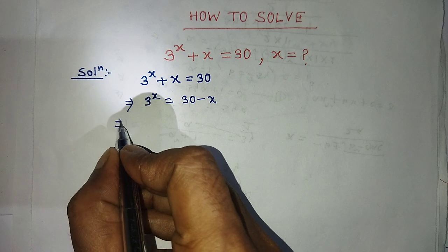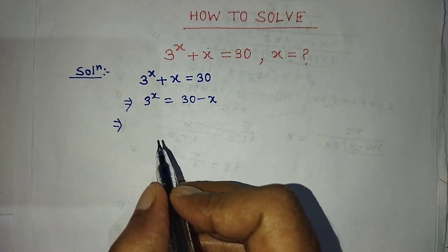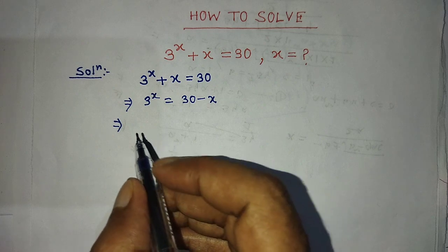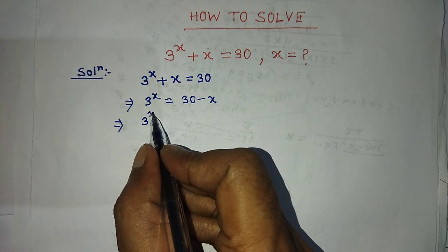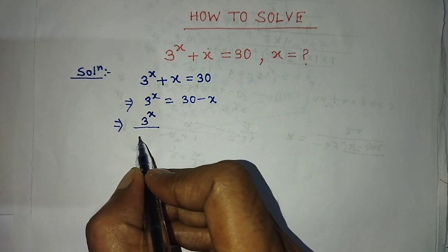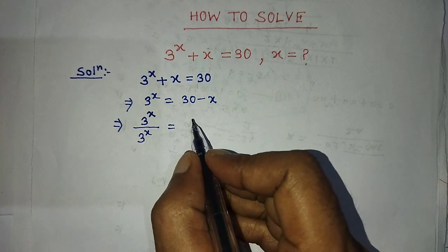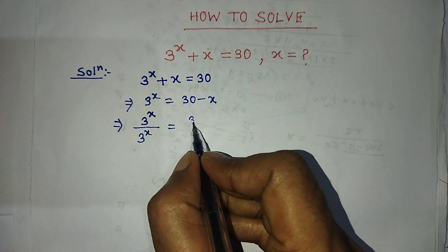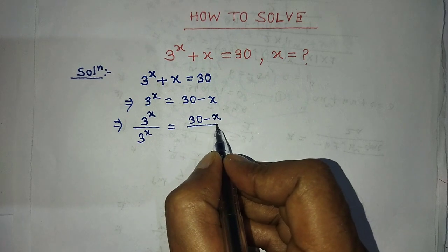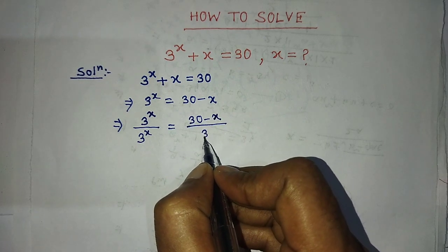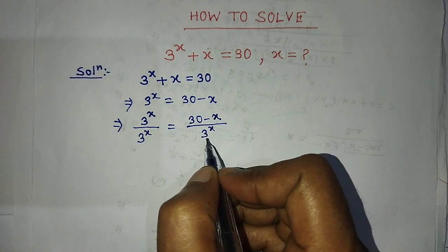After that, we have to divide the left hand side and right hand side by 3 to the power x. So on the left hand side we write 3 to the power x over 3 to the power x, and on the right hand side we write 30 minus x over 3 to the power x.